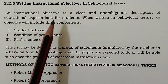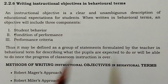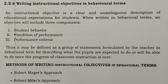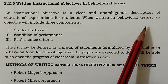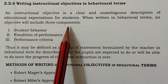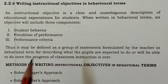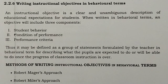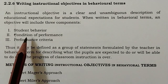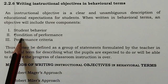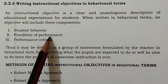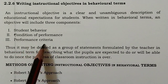An instructional objective is a clear and unambiguous description of educational expectations for students. When written in behavioral terms, an objective will include three components: first is Student Behavior, second is Condition of Performance, and third is Performance Criteria.